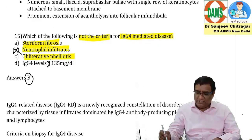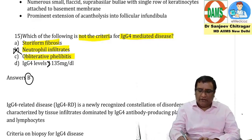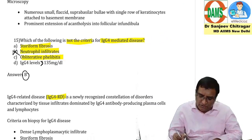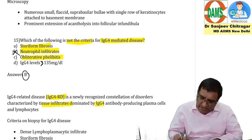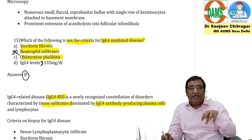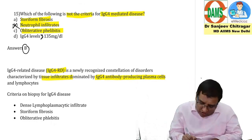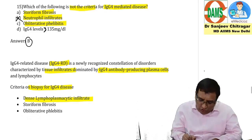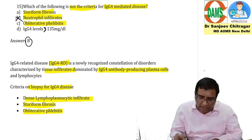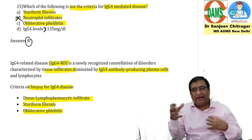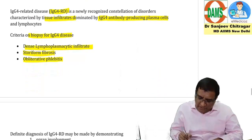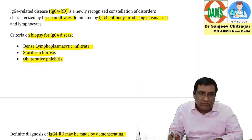Let's have a quick review of IgG4 related disease. IgG4 RD is a new disease characterized by tissue infiltrate dominated by IgG4 antibody-producing plasma cells. The biopsy criteria include dense lymphocytic infiltrate with plasma cells, storiform fibrosis, and obliterative phlebitis. The phlebitis causes obliteration of the vein, leading to cell death and fibrosis.